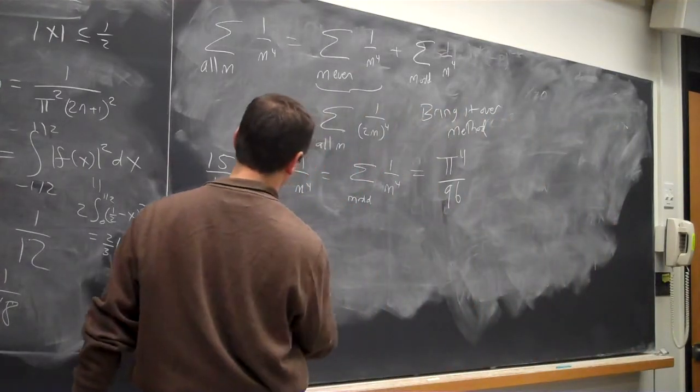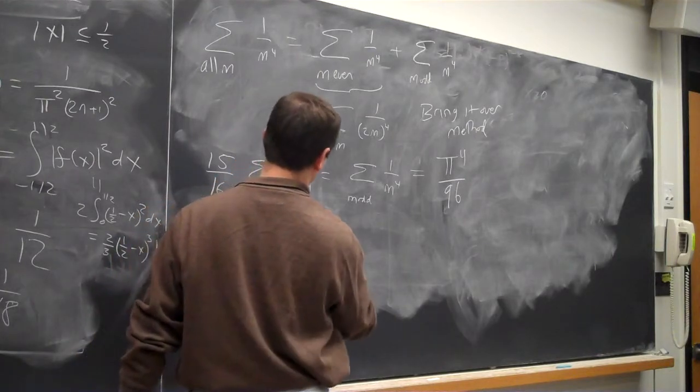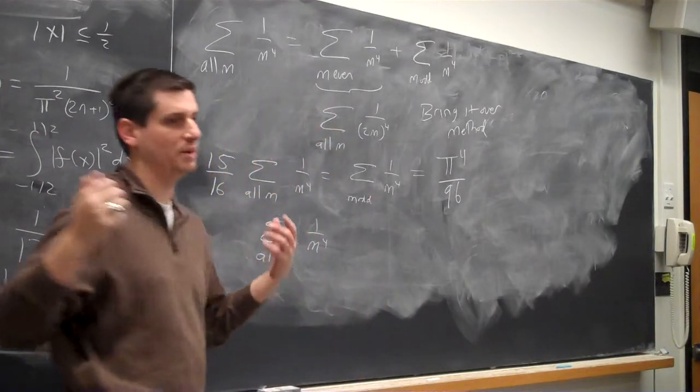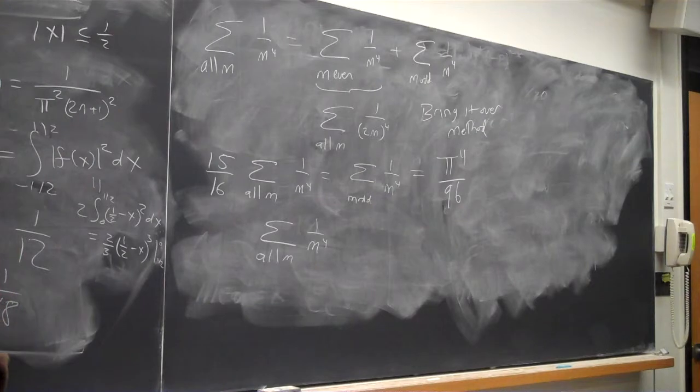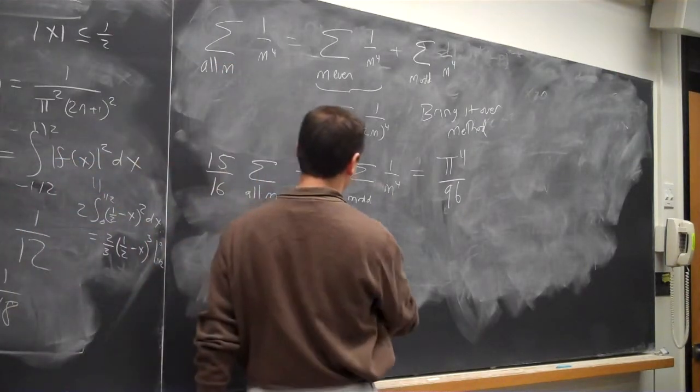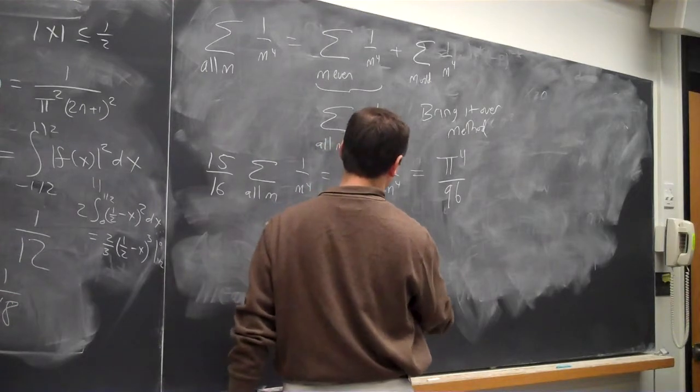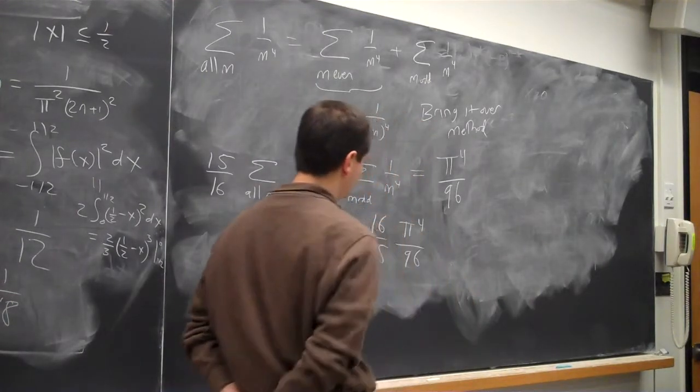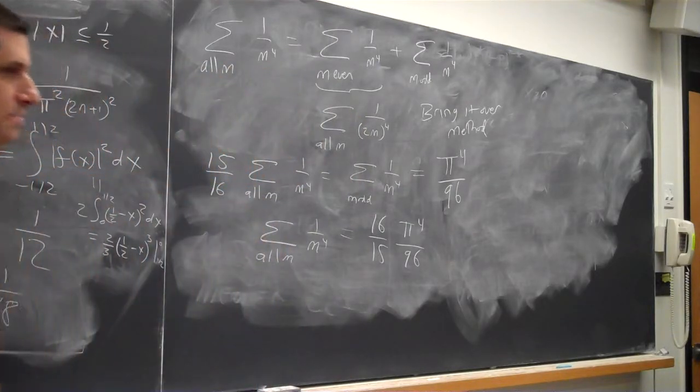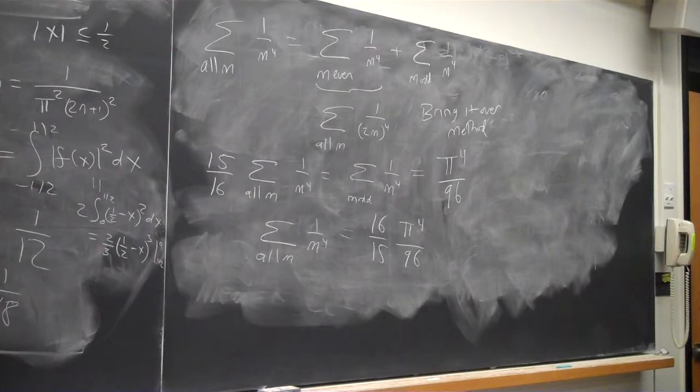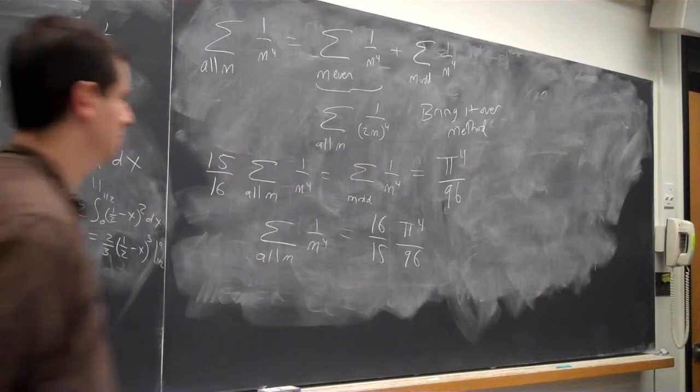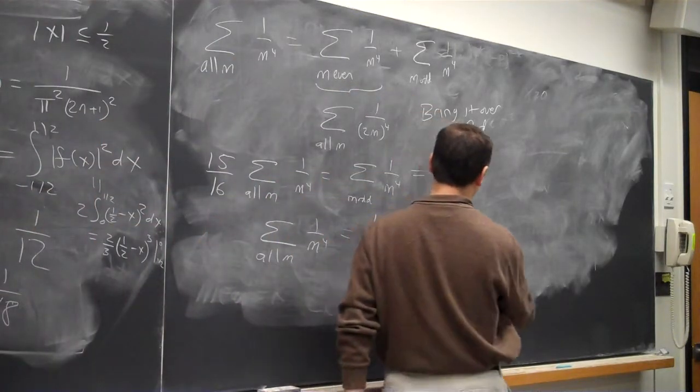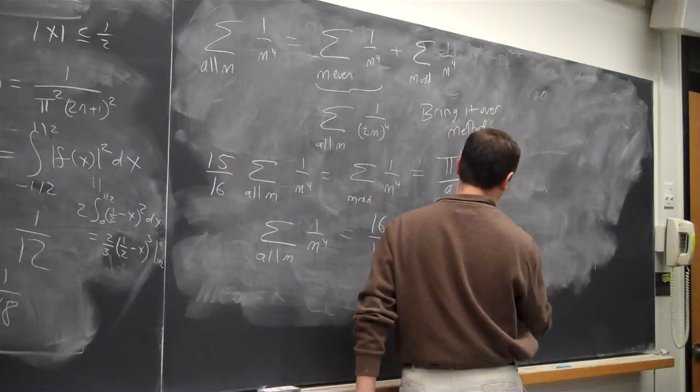So the sum over all m of 1 over m to the 4th, and of course by all m I only mean m goes from 1, 2, 3, 4. I don't mean negative m's, I don't mean m equals 0. It's going to just be 16 15ths times pi to the 4th over 96. How many times does 16 go into 96? Six. And so we just get pi to the 4th over 90.